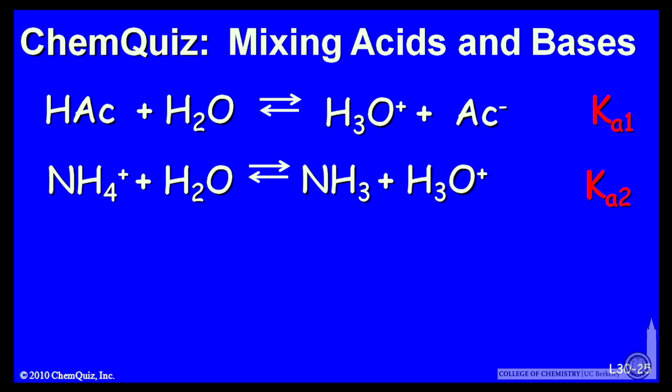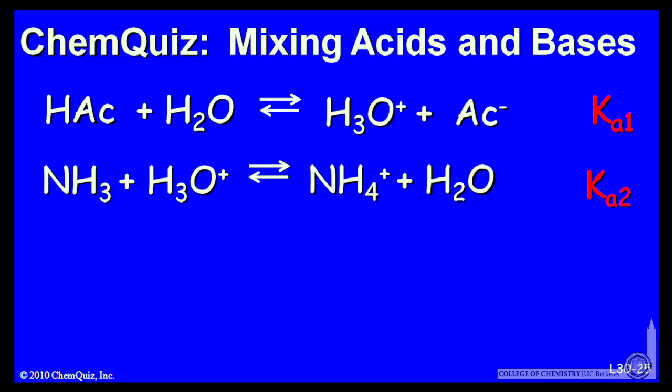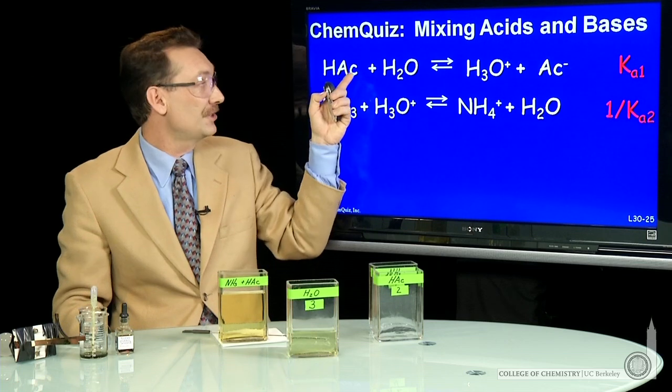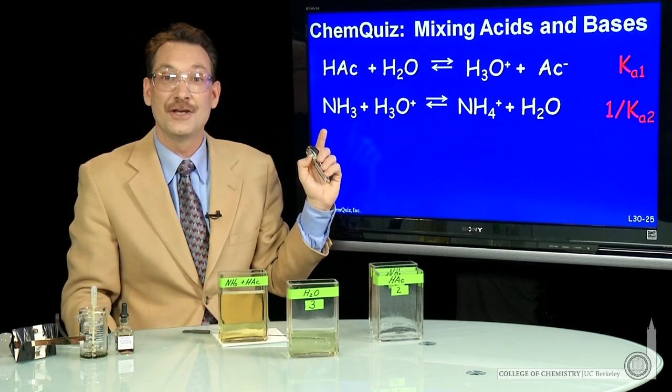I have all the right components. I have NH3 and HAC going to be mixed together. When I mix them together, I'll reverse this. So Ka2 is 1 over Ka2 now. And now I have a direct mixing of these two solutions, the HAC and the NH3.